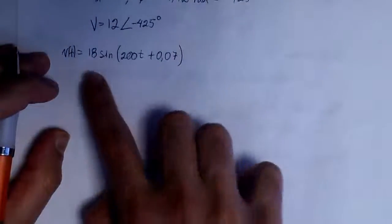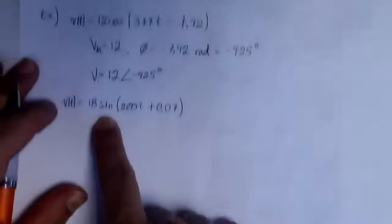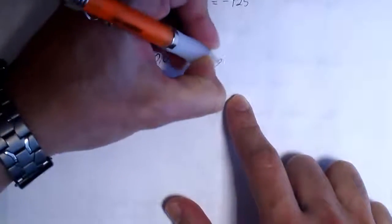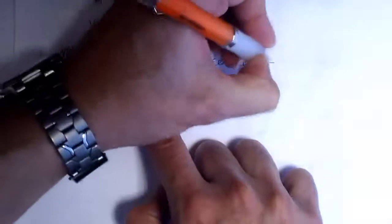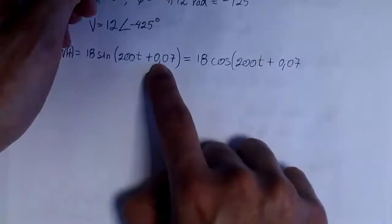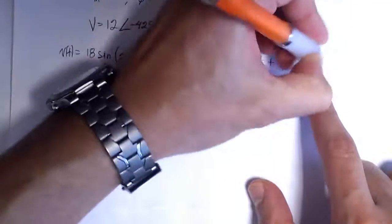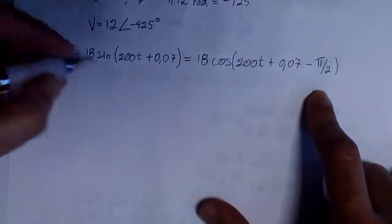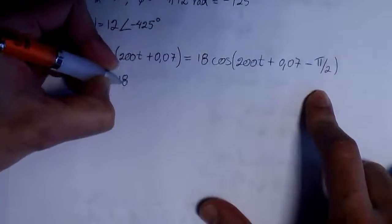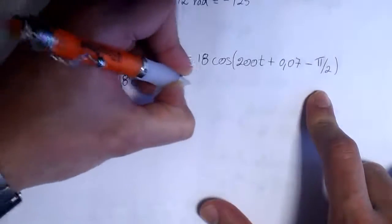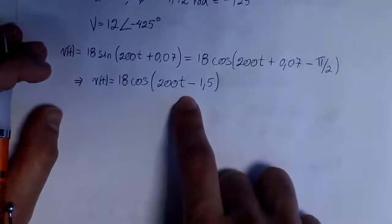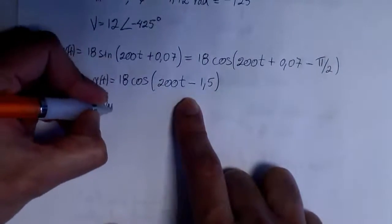Now what happens if we have a sine function? Let's say we have 18 times sine of (200t + 0.0) radians, and we want to find its phasor representation. The problem is we have a sine, not a cosine. So we convert the sine function into a cosine by adding or subtracting a 90-degree phase shift. The sine function equals the cosine with a subtracted phase shift of 90 degrees (π/2), so our function becomes 18 times cosine of (200t − 1.5) radians.